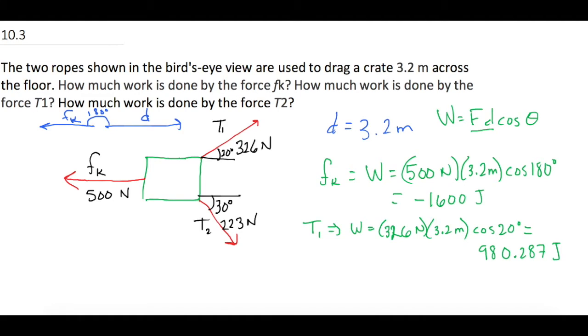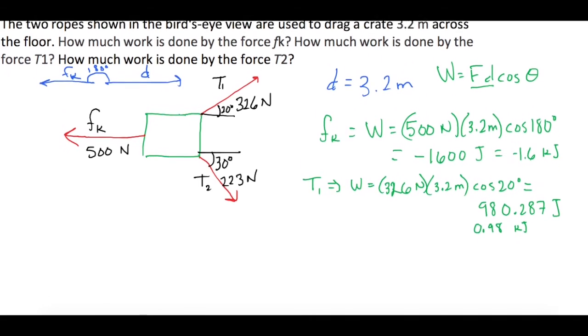They want you to put these in kilojoules, so you just move the decimal place over three. For friction, that gives us negative 1.6 kilojoules. For T1, that gives us 0.98 kilojoules.